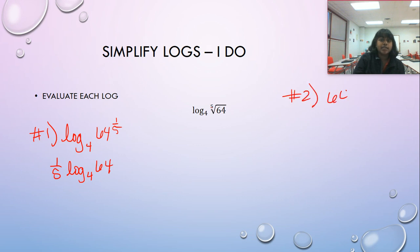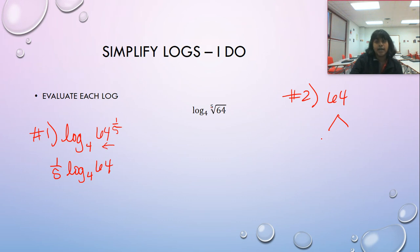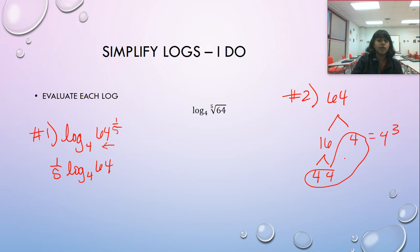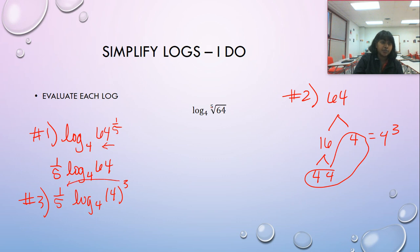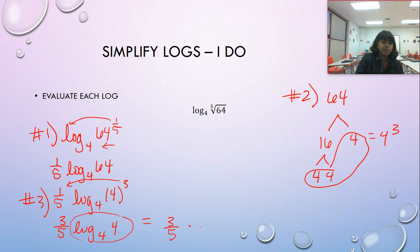Now we need to figure out the factor tree for 64 in terms of base four. We know 16 times four is 64, and 16 is four times four, so 64 is four cubed. We rewrite as one fifth times log base four of four cubed, then drag the three forward: three fifths times log base four of four. Since log base four of four equals one, this becomes three fifths times one, which is just three fifths.